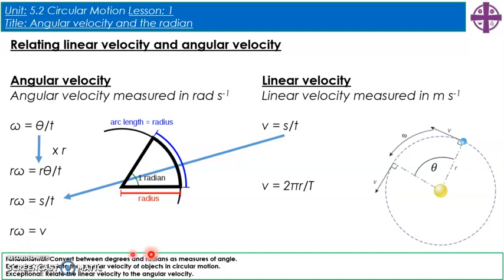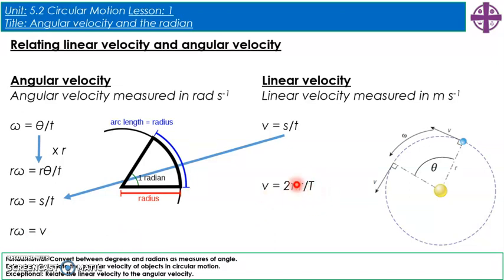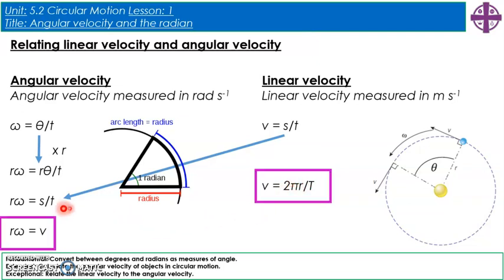Because omega = 2π/T, we can also write v = 2πr/T, where T is the time period for one full rotation. So we have two new equations: v = rω and v = 2πr/T.